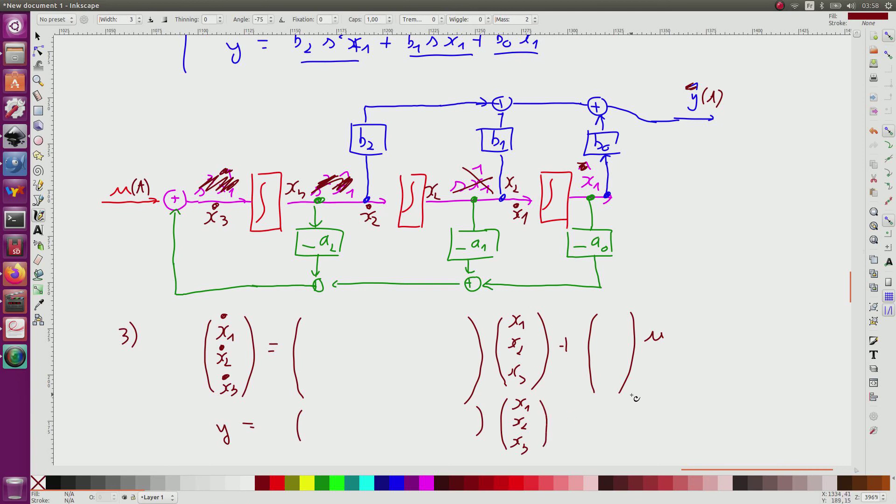Plus, so I have no direct term, that's all. For this, x dot 1 corresponds directly to x2. This is why I have 0, 1, 0. Here, in the same manner, I have x dot 2 which is equal to x3. This is why I have 0, 0, and 1. And x dot 3 is the sum of u, so u here 0, 0, and I have minus a2 here for x3, minus a1 for x2, and here minus a0 due to this.